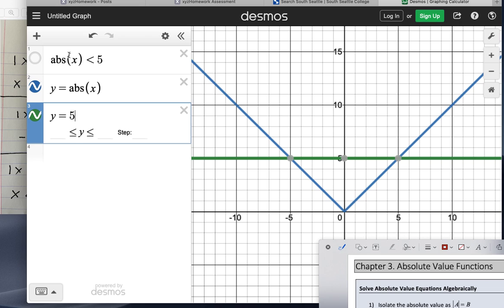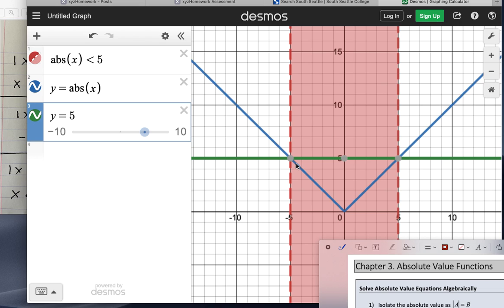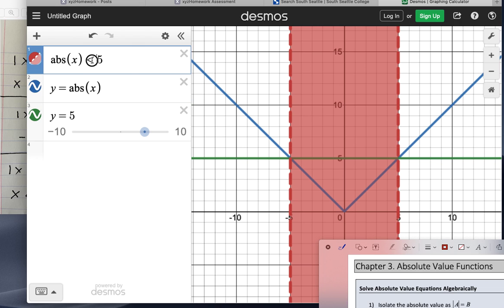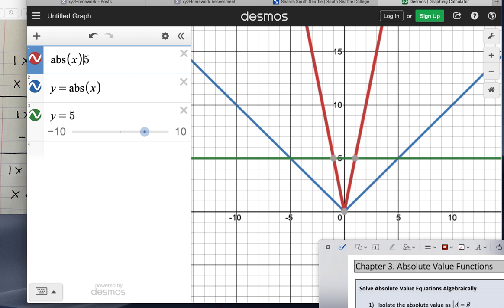And if I change, let me turn this one on. So this is absolute value of x less than 5. You can see right here it's showing all the values between negative 5 and 5 would be my solutions because again, that's where the blue graph is under the green graph. So the last possibility is where is it greater than 5?